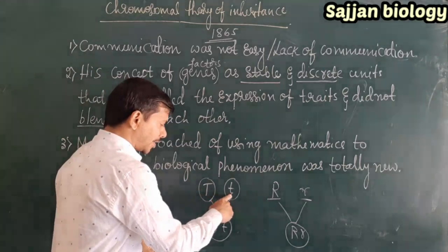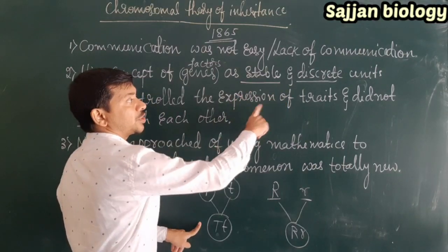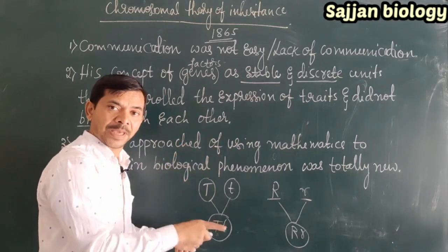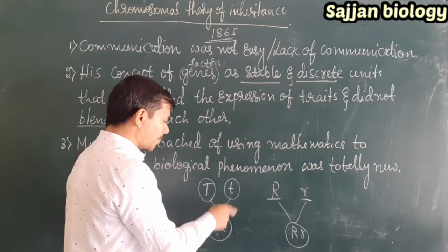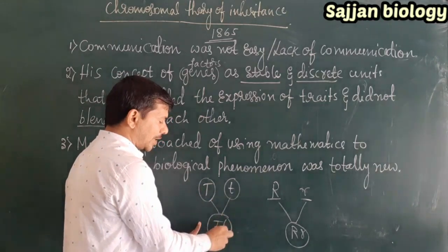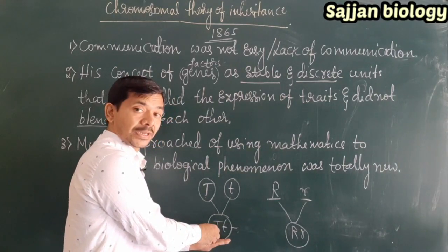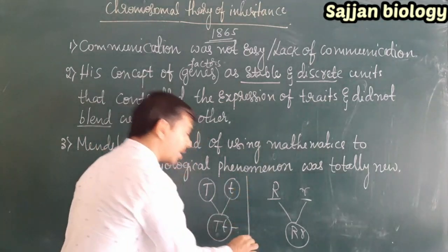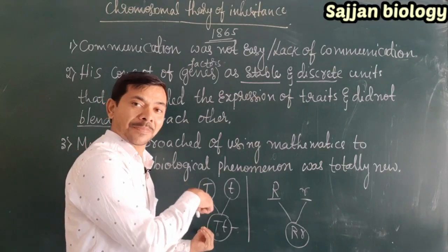For example, consider capital T and small t. They are stable and control expression of traits — one dominant character is expressed. So the dominant character must be expressed. One tall, one dwarf — when alleles come together in a hybrid, it is the dominant character that is expressed, as established by Gregor John Mendel.